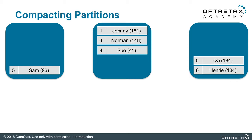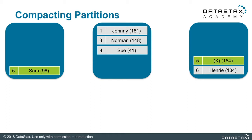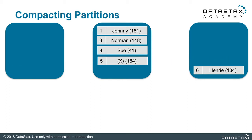Here's Sam. He's located in the SSTable on the left and also has a tombstone on the right. This particular tombstone is less than GC grace seconds, which means it needs to stick around until it's more than 10 days old. So Apache Cassandra writes that tombstone into the new SSTable file.